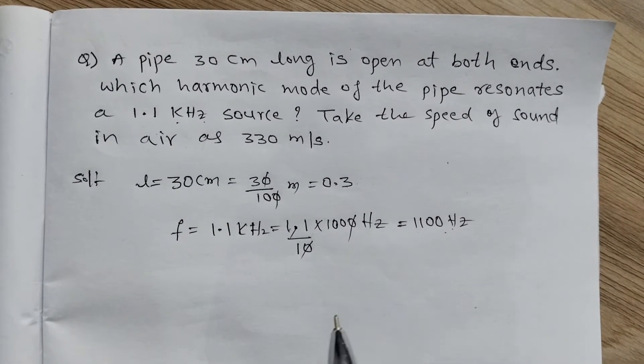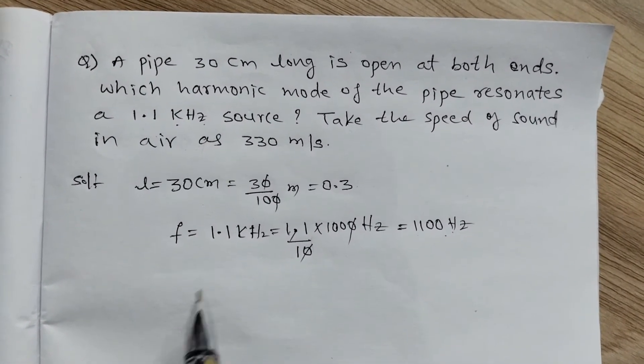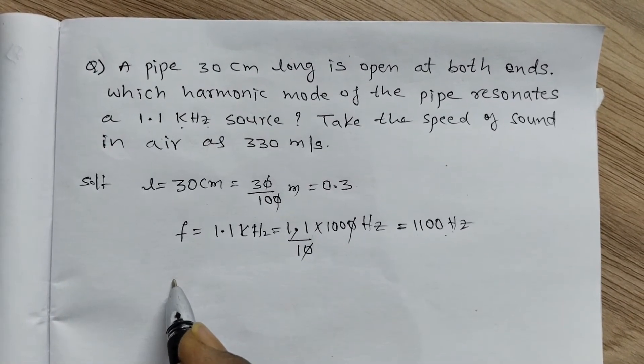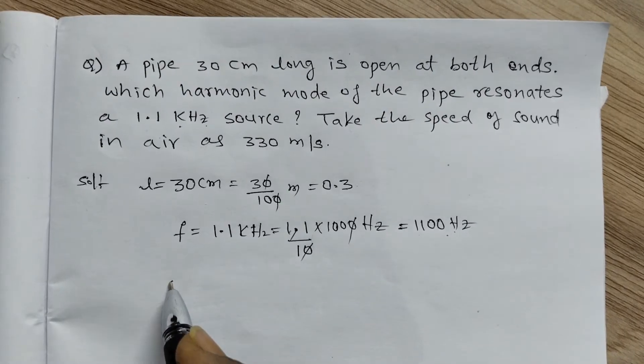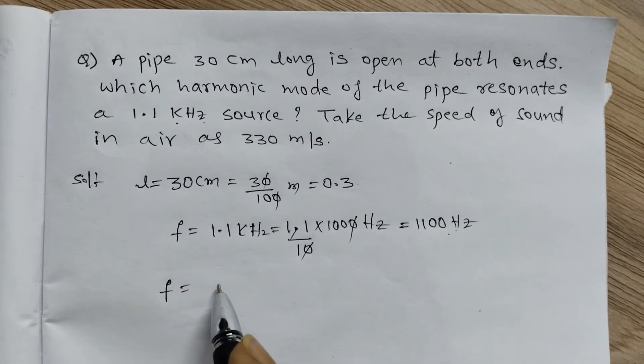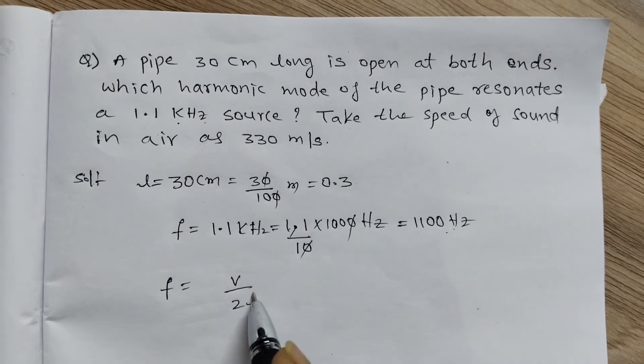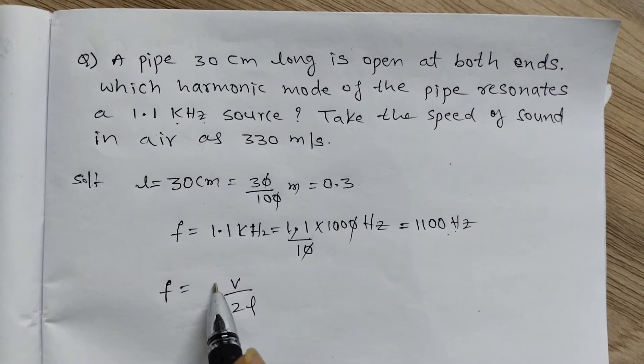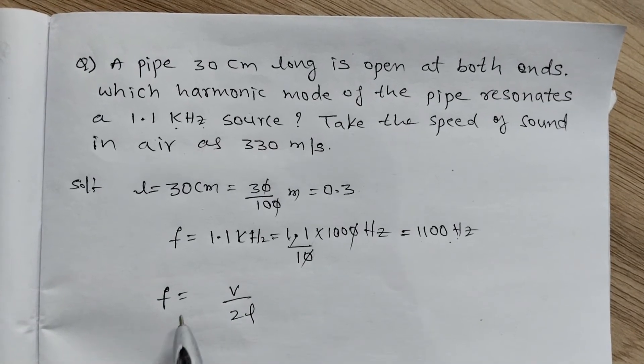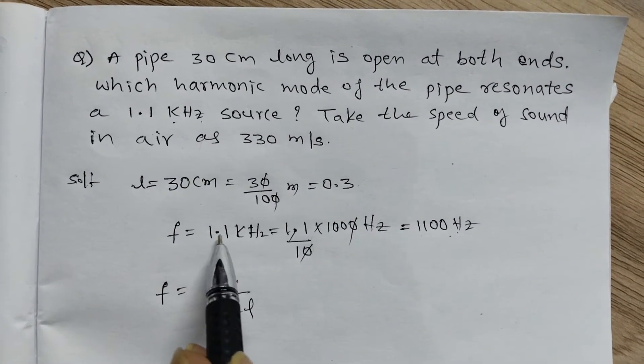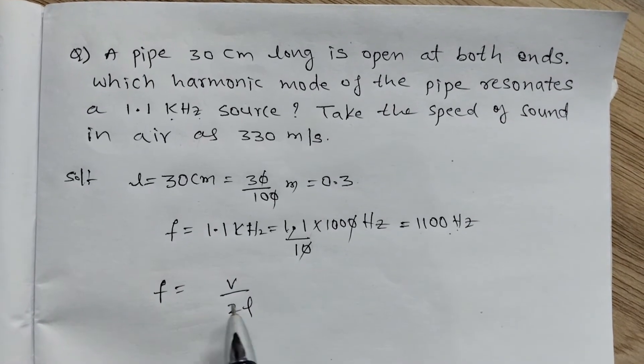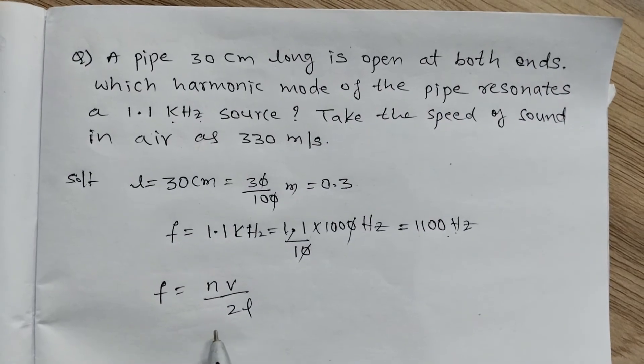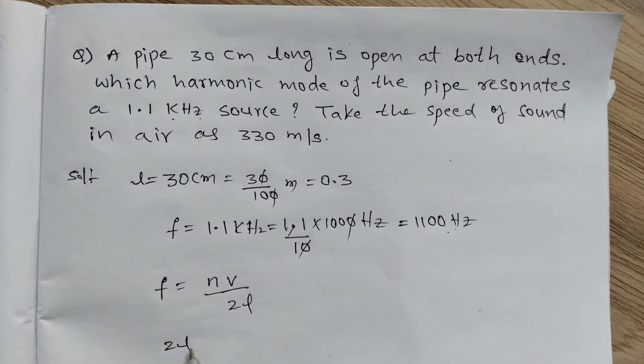The general frequency formula: f is equal to V by 2L. This is the fundamental frequency, first harmonic. Second harmonic is 2V by 2L, third harmonic is 3V by 2L. For which harmonic is 1.1 kilohertz?